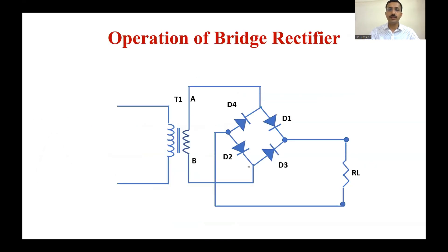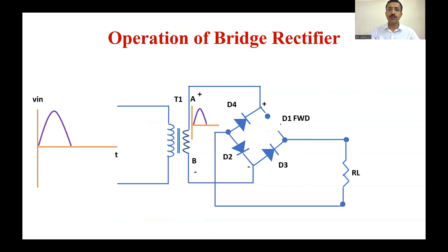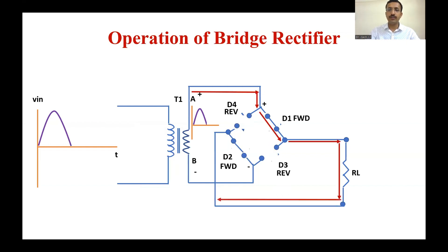In the positive half cycle, D1 and D2 are forward biased while D3 and D4 go into reverse bias. As a result, the current flows in the pattern shown in the figure and we get the voltage across the load resistance RL.